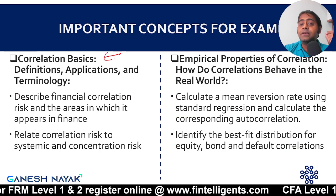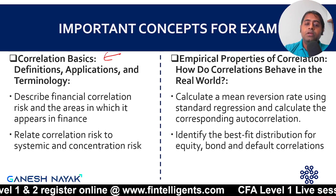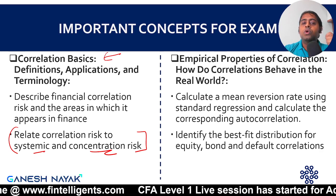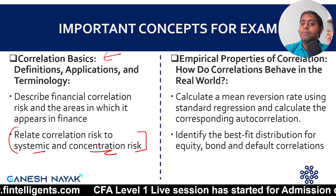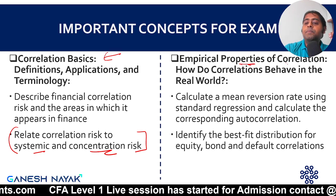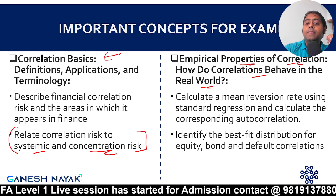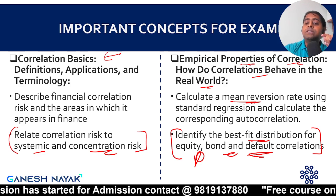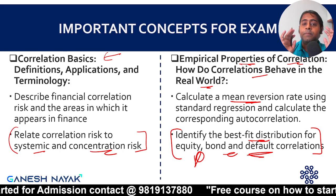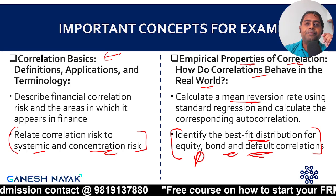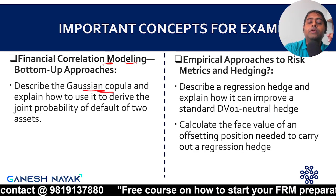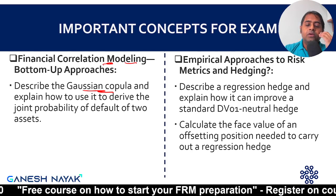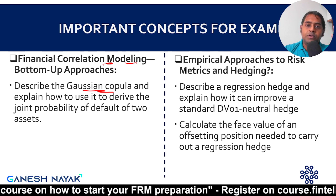For correlation basics, the important concept is concentration risk — there are a few sums showing how concentration risk impacts your portfolio, which is important for the exam. In the empirical properties of correlation chapter, the best-fit distribution has been tested in past exams, as has the concept of mean reversion. It is a small, theory-driven chapter. For financial correlation modeling, the Gaussian copula is the more standard copula used to understand correlation between two or three variables; the t-distribution copula is also present but the Gaussian copula is slightly more important for your exam.